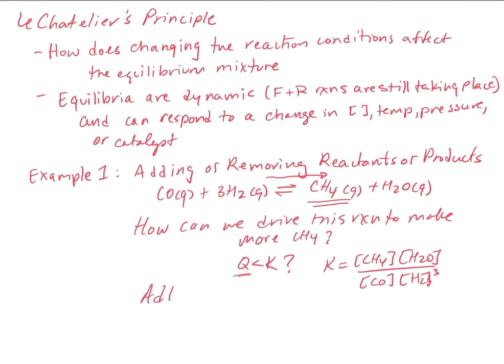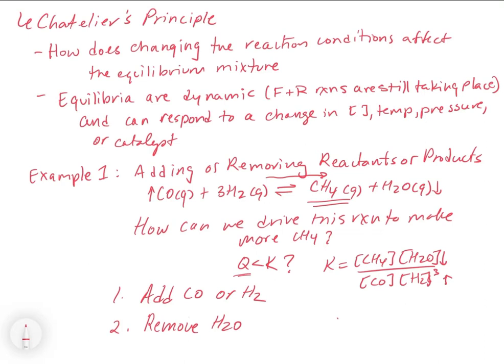K equals the concentration of CH₄ times the concentration of H₂O divided by the concentration of CO times the concentration of H₂ cubed. One possibility is to give it too many reactants — we could add CO or H₂. That's going to make the denominator go up, making Q less than K so the reaction goes forward. Another possibility is to take away some water — if we dry the mixture out, that's also going to push the reaction forward.